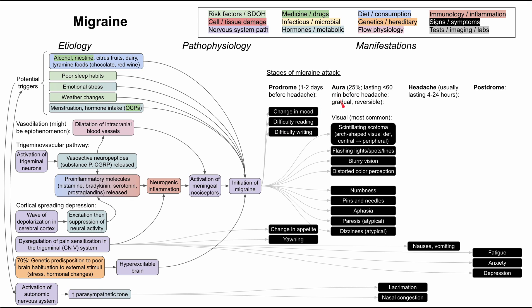Next, let's talk about the aura. The most common auras are visual features — unusual visual phenomena you notice before the headache. They happen in about 25% of people with migraines, last under an hour before the headache, come on gradually, and are fully reversible. One common type is scintillating scotoma — a visual deficit that is arch-shaped, starting in the central visual field and working toward the peripheral visual field.